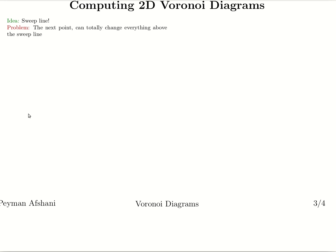Now let's look at an algorithm to compute the Voronoi diagram. The idea we'd like to use for this algorithm is a sweep line idea. But the problem is that the traditional way of doing sweep line fails, because the next event point could change a lot of things that are above the sweep line.